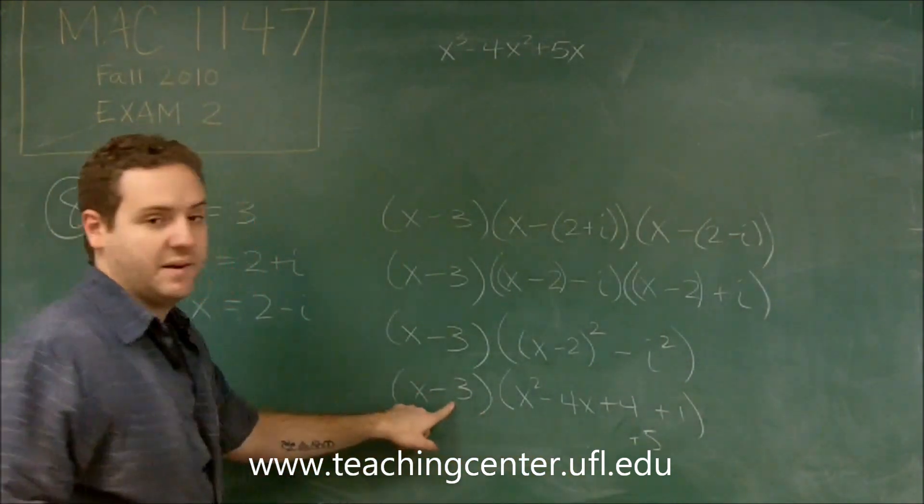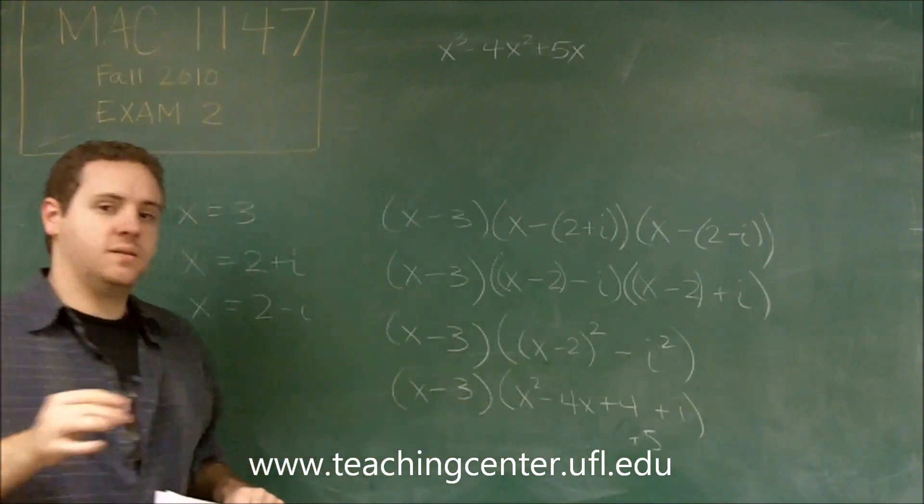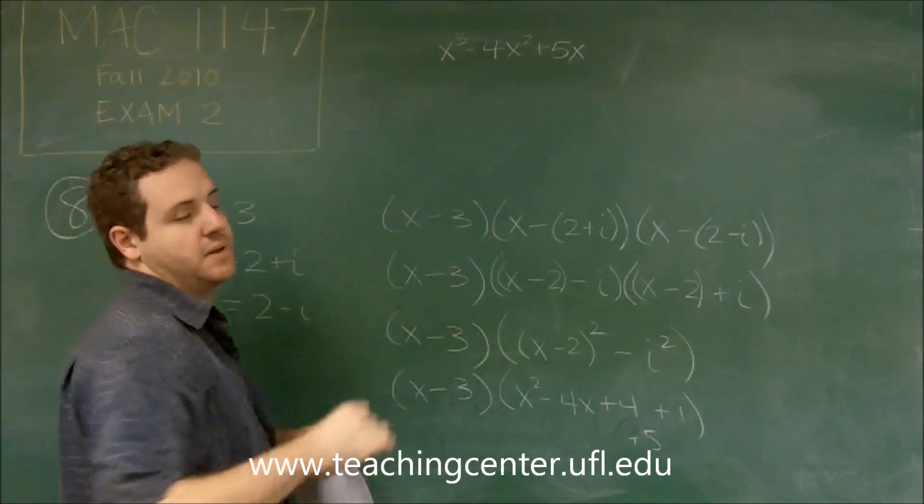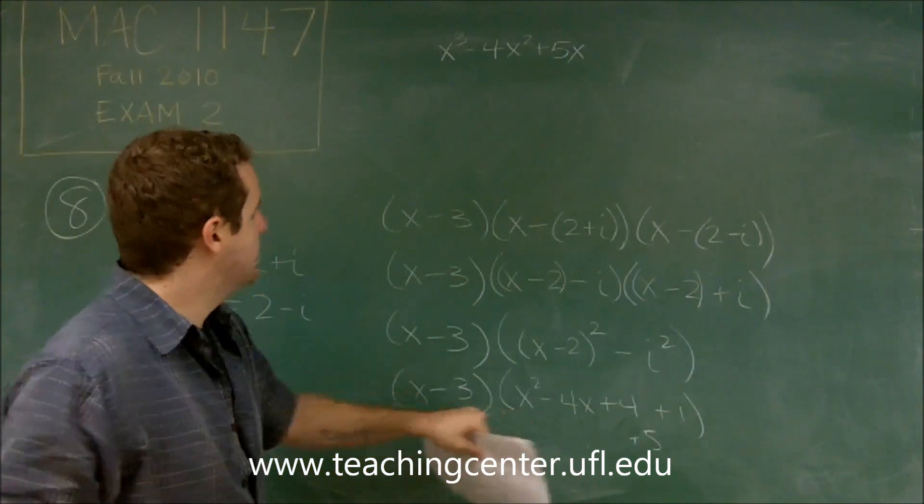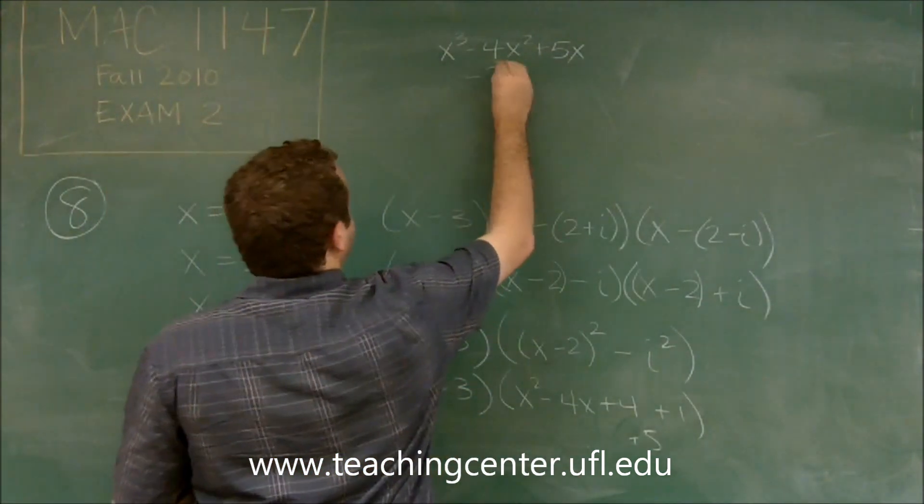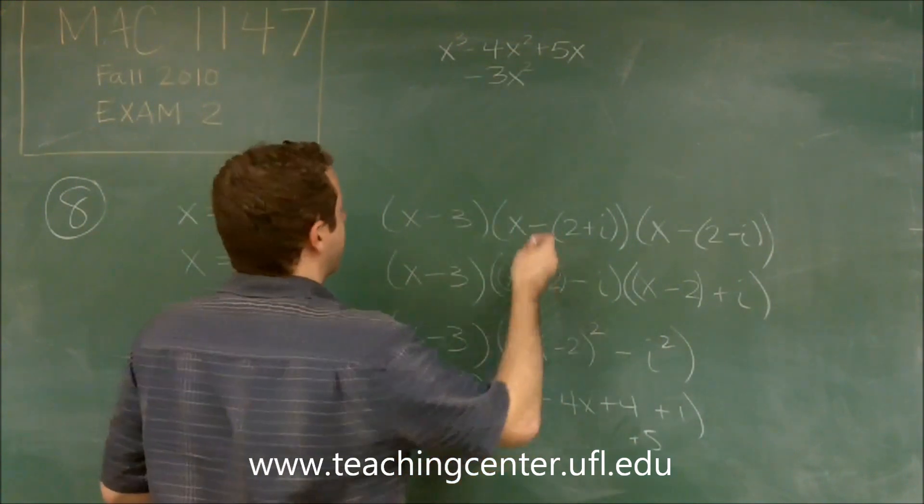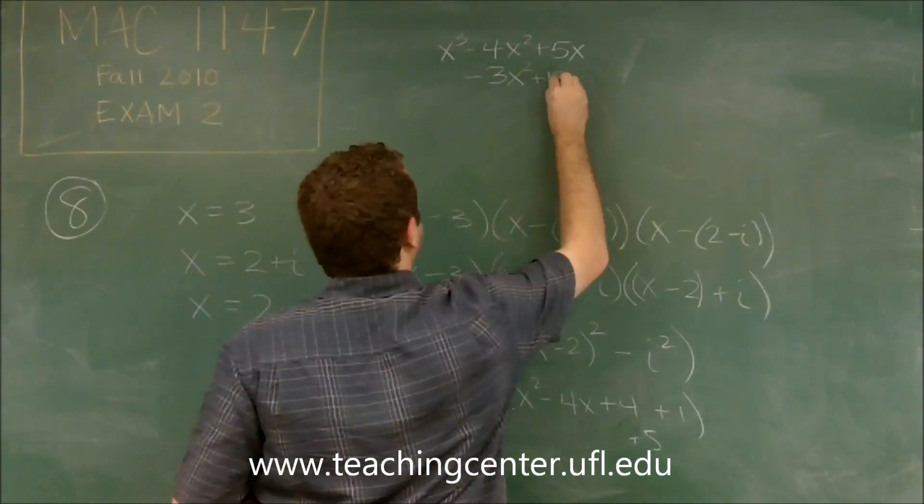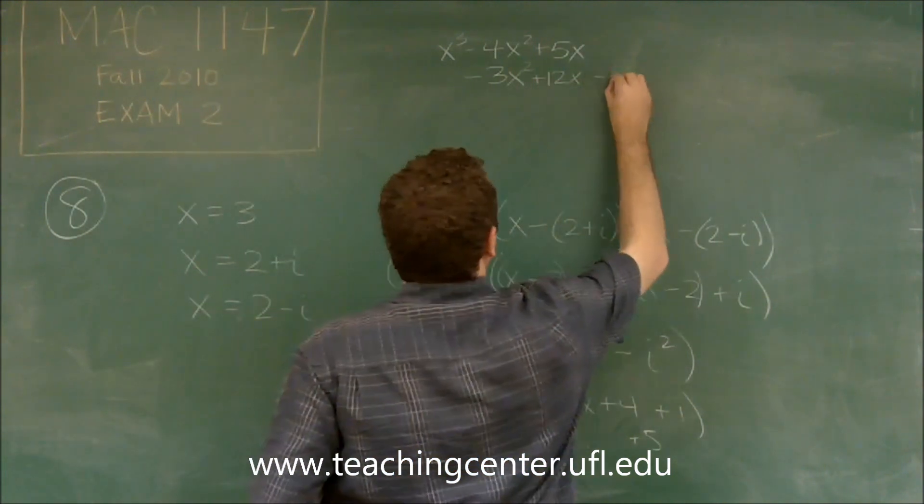And now we're going to multiply all three terms by negative three. So what you want to do is write them lined up so that your math is then easier afterwards. So we have minus three times x squared. So we'll write that under the x squared here. Minus three times minus four x is plus twelve x. So we'll write that there.